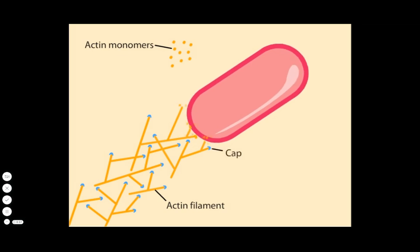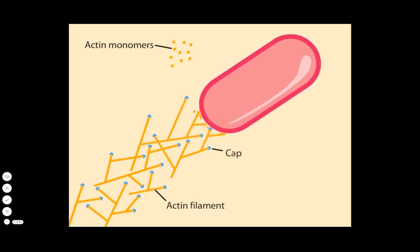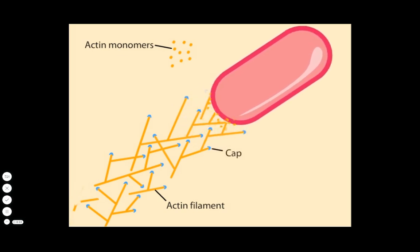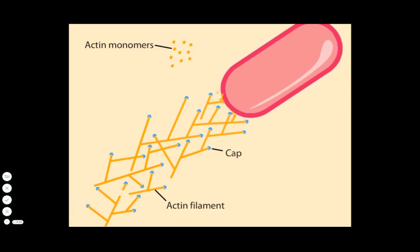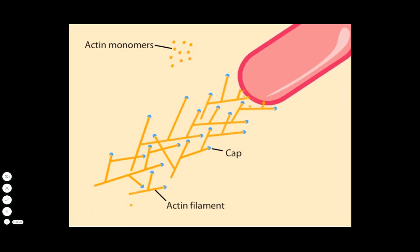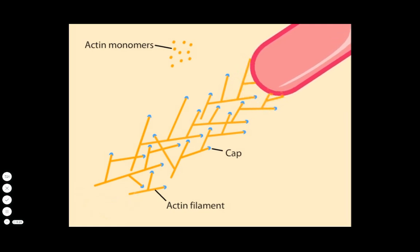Caps restrict the continued growth of filaments that are no longer pushing the bacterium. The network of filaments itself remains stationary, although it is continually broken down, releasing actin monomers that can be used for new filament growth at the bacterial surface.